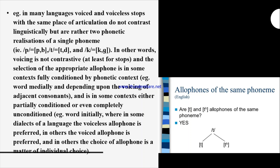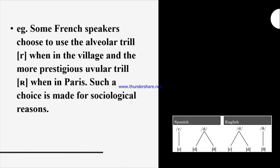For example, word-initially in some dialects of a language, the voiceless allophone is preferred. In others, the voiced allophone is preferred, and in others, the choice of allophone is a matter of individual choice. For example, some French speakers choose to use the uvular trill /r/ when in the village and the more prestigious uvular trill when in Paris. Such a choice is made for sociological reasons.